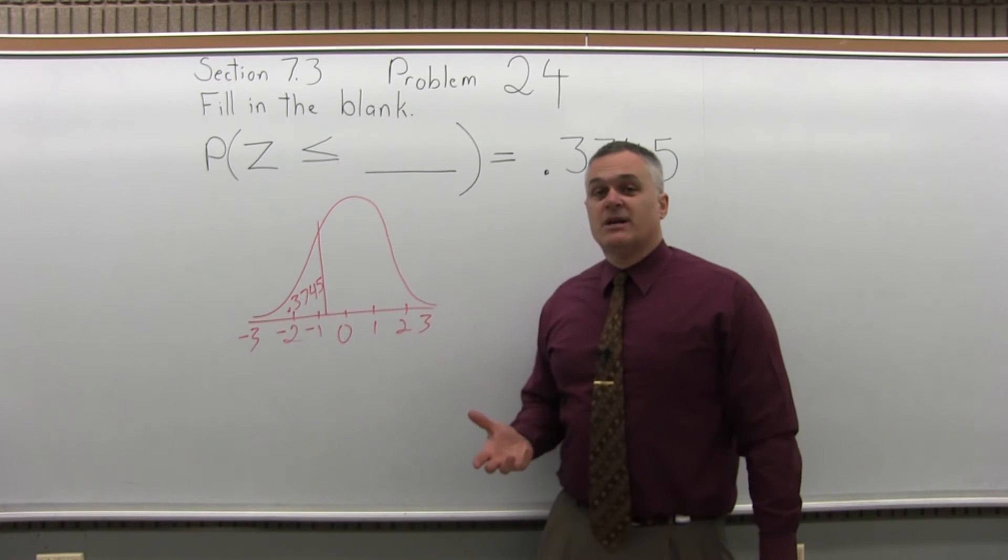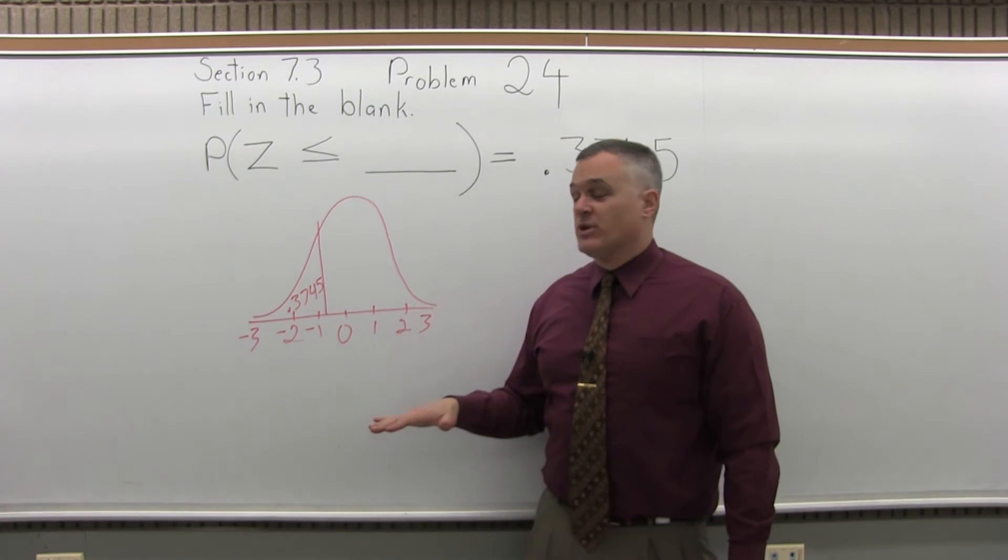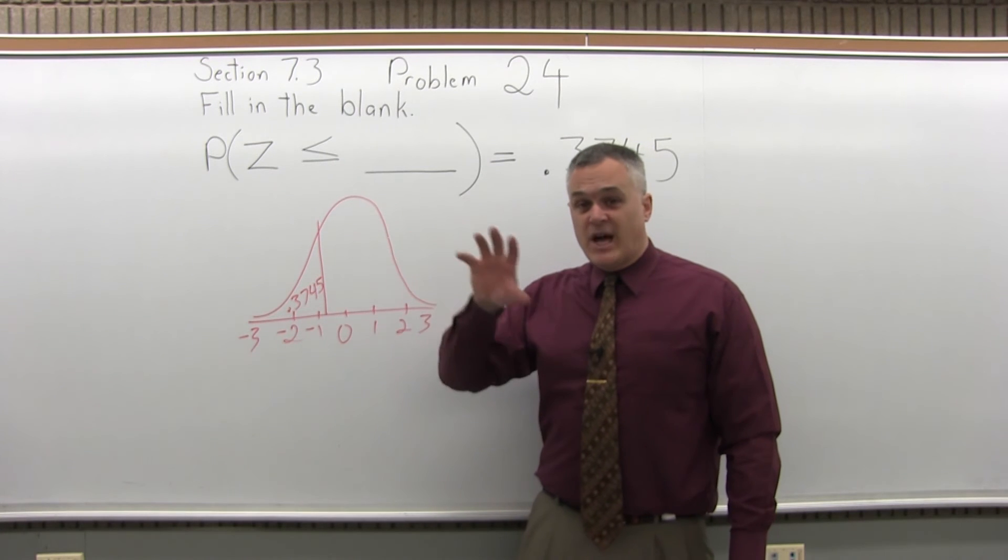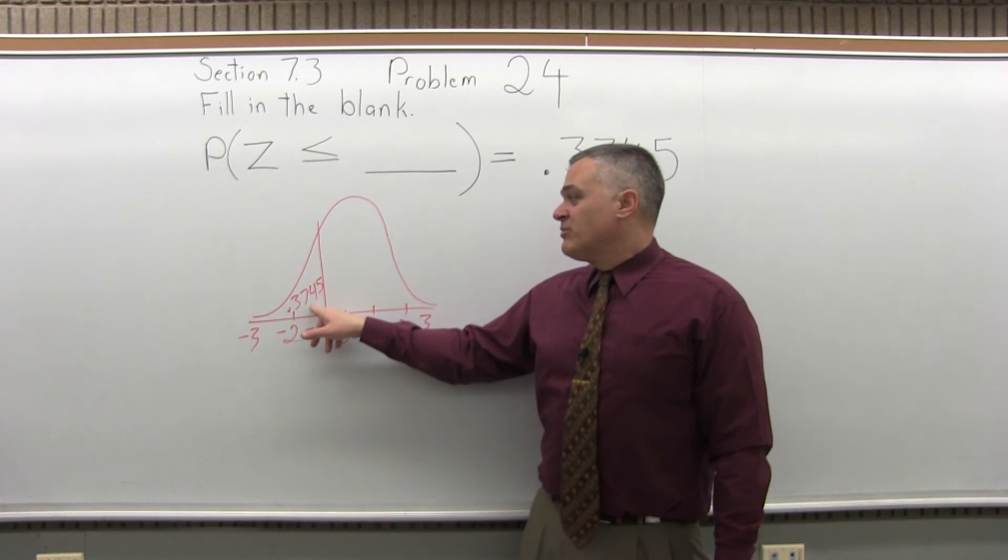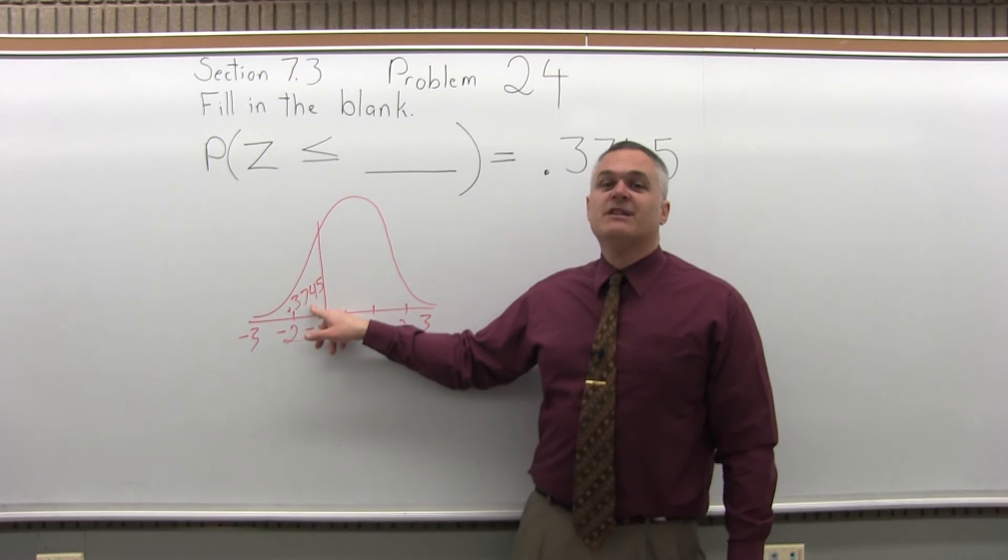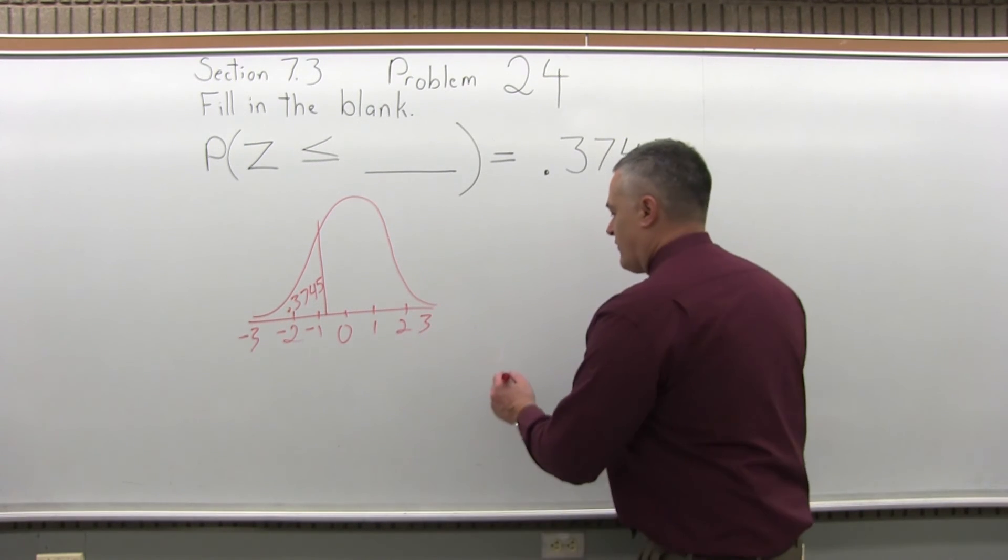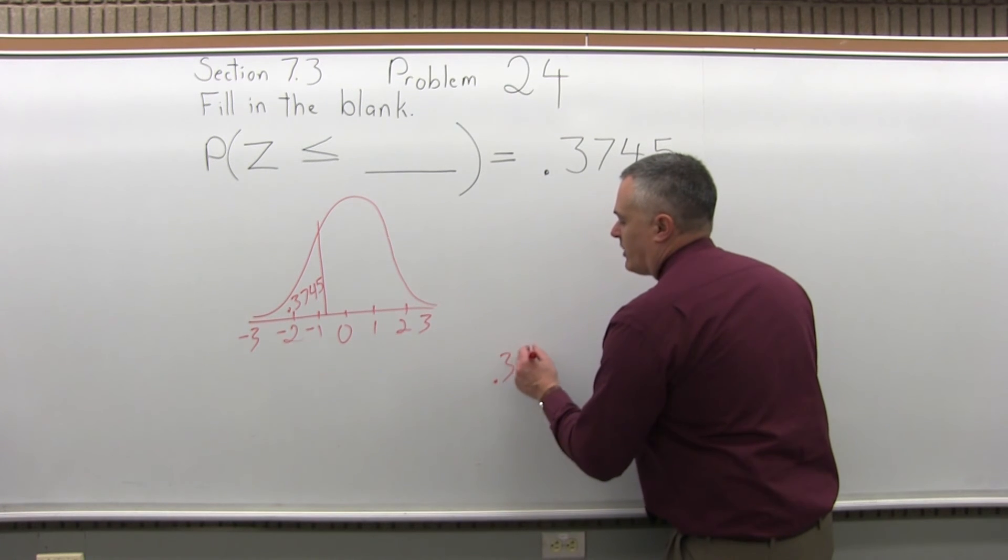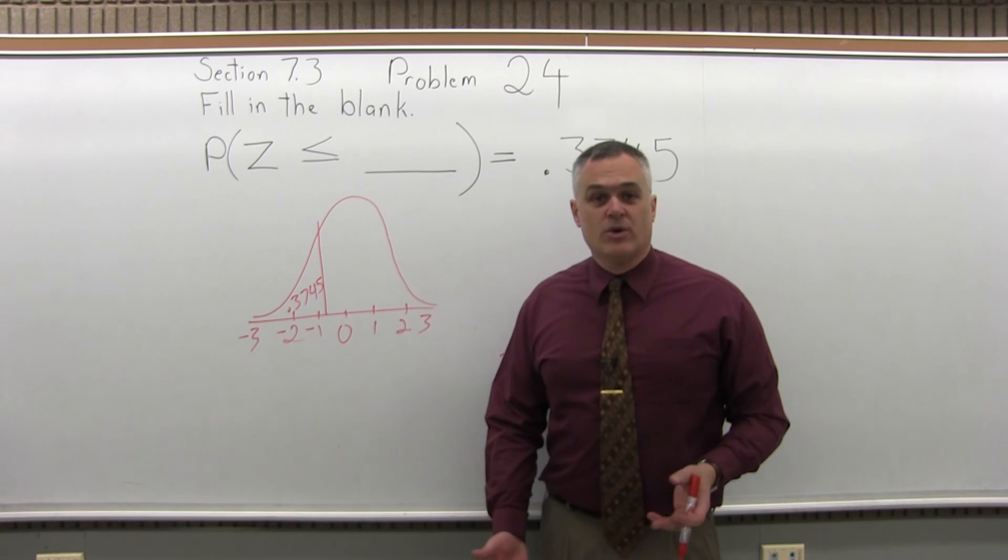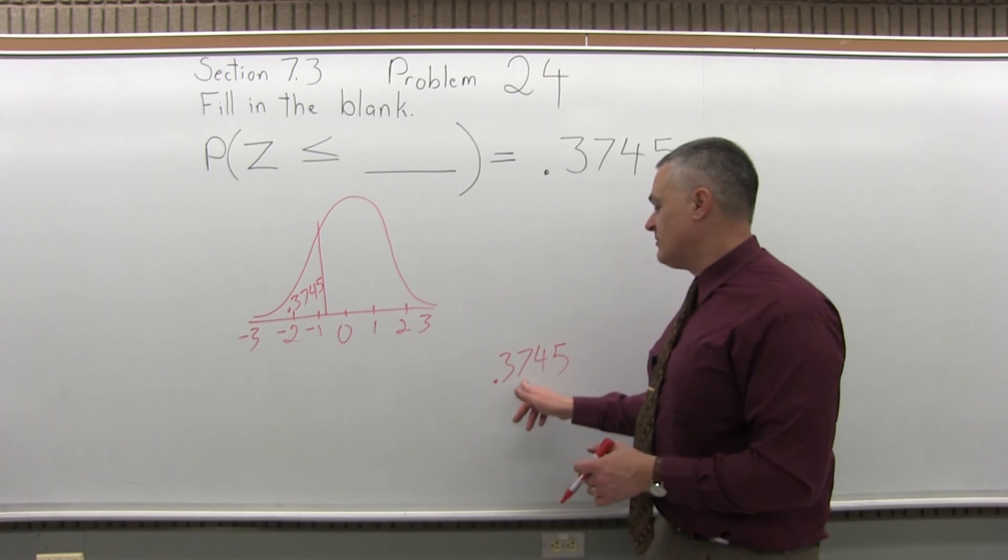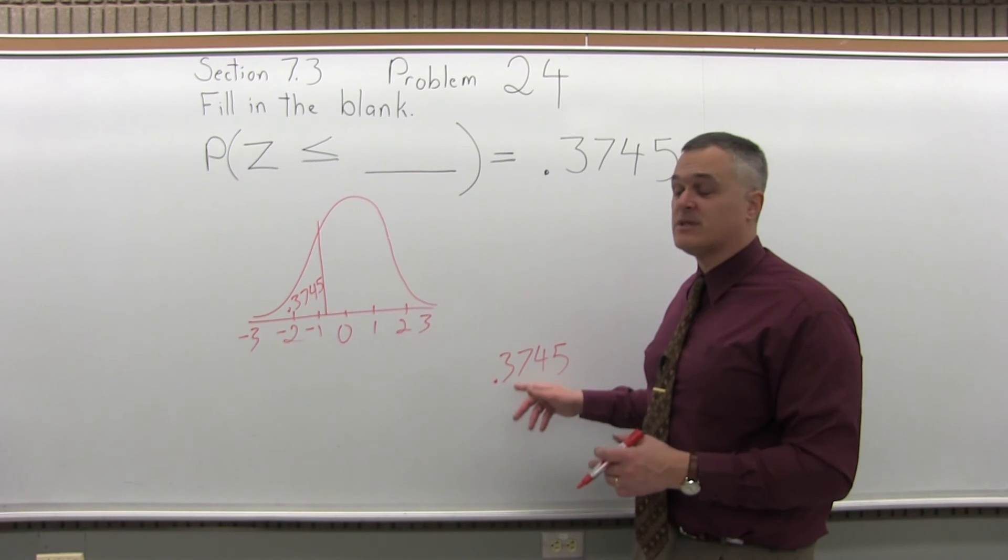The chart is set up to tell you the probability of being less than what you look up. So what we want to do is look through that standard normal chart, the values in the middle, find .3745, and then see what row and what column it came from. As you look through the chart, look for .3745, and the values in the chart do go in order. Wherever you start, you can keep going and getting bigger or smaller until you find that .3745 somewhere in the chart.